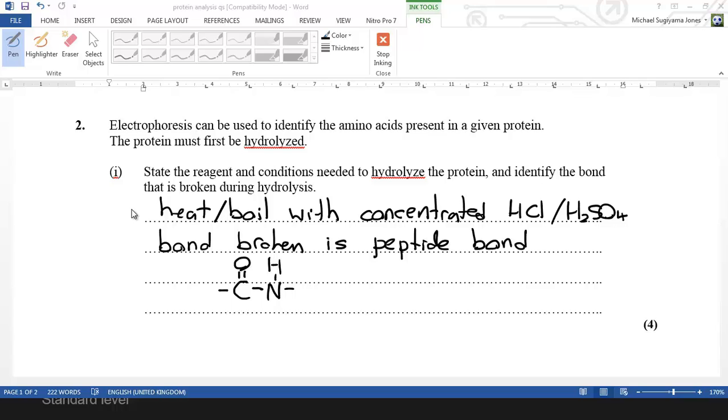For this question it's the same as the one we looked at before. It's basically how do you hydrolyze a protein and identify the bond that's broken. You heat or boil with concentrated HCl or H2SO4 and the bond broken is the peptide bond.